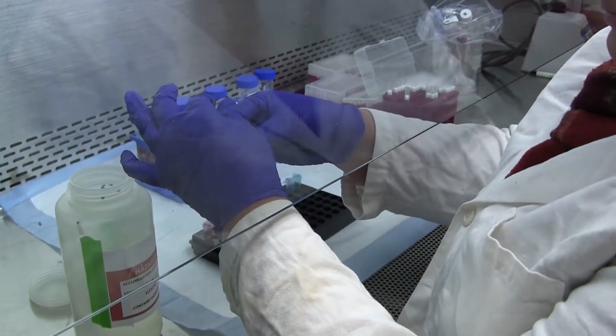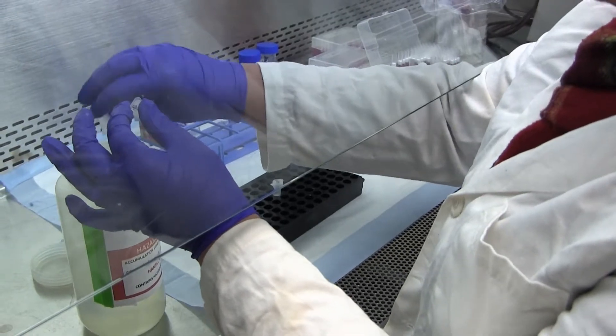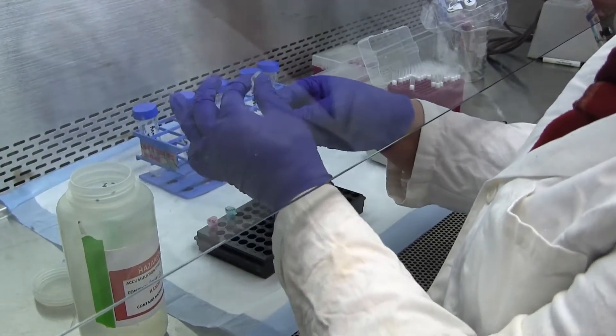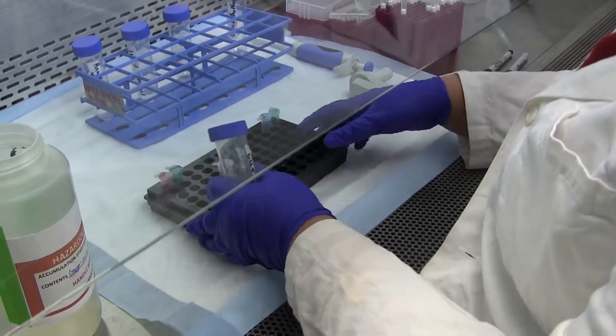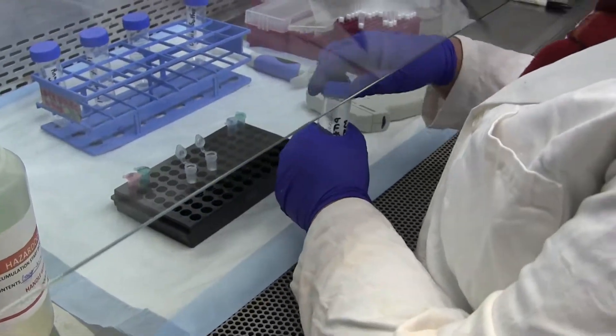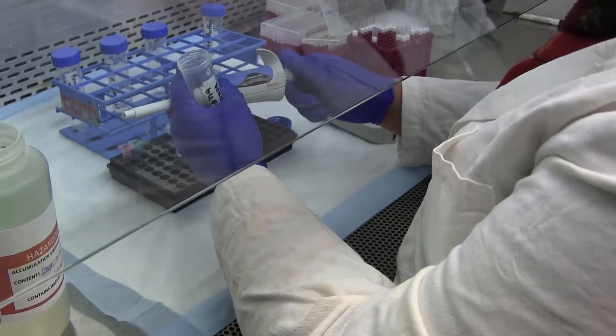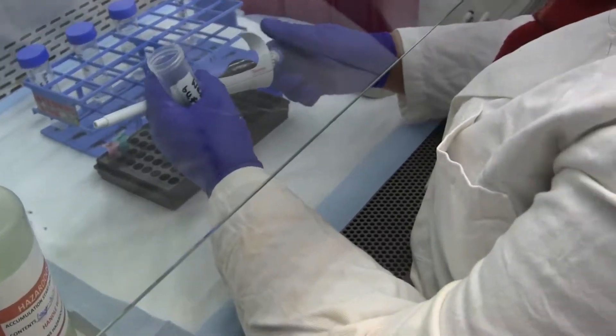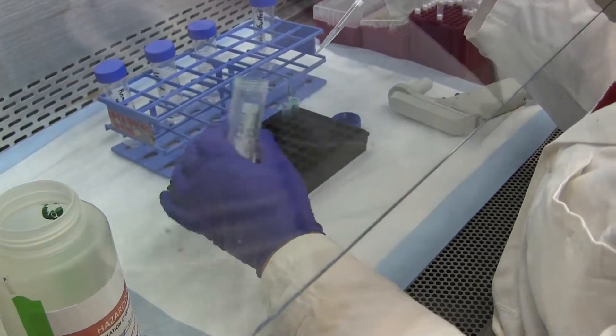So then after dumping the flow through, another wash, the second wash buffer, 400 microliters. In the Qiagen kit here, we have two different wash buffers, and the CDC protocol is just the same wash buffer. But both of them have a smaller percentage, around 70% ethanol, and that's required for a wash buffer. So next step is to centrifuge.